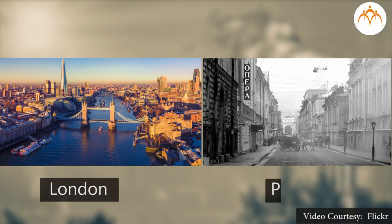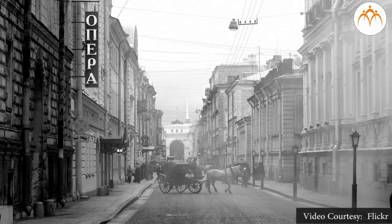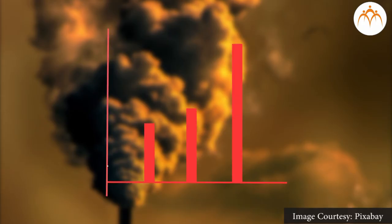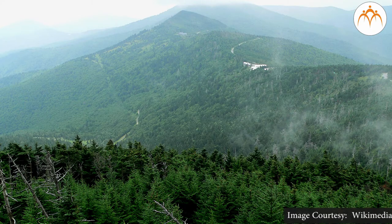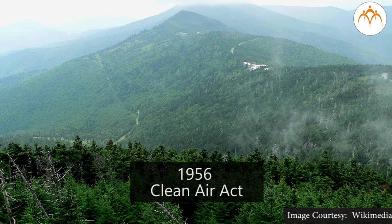London and Pittsburgh are given as examples of pollution on a large scale. Due to extreme pollution and smog, 700 people died in 1873, 1150 people in 1911, and nearly 4000 people in 1952. In 1956, the Clean Air Act was introduced.